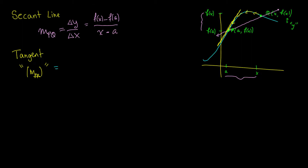The slope m of the tangent line is equal to the limit as x approaches a, since x is getting very close to a until it's essentially on a. That is the limit as x goes to a of f(x) minus f(a) over x minus a. It is the exact same slope formula — we're just taking the limit as x approaches a to get the tangent line.